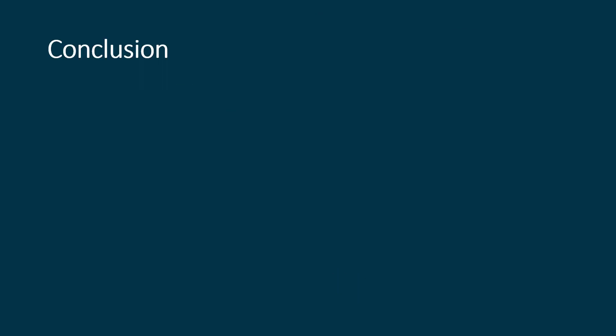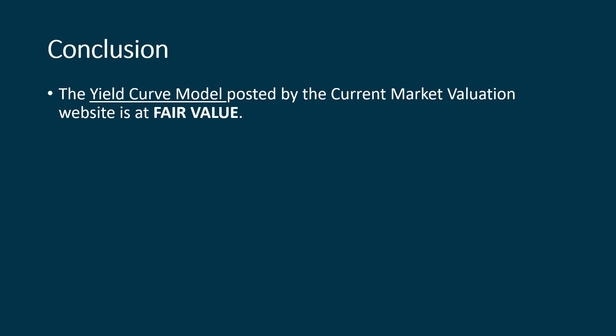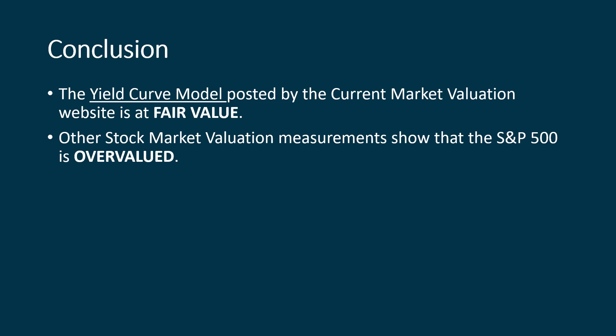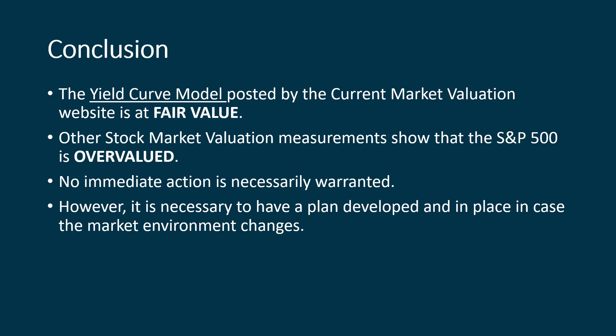So what is the conclusion? The yield curve model on the current market valuation website is at fair value. Other stock market valuation measurements show that the S&P 500 is overvalued. You don't necessarily need to freak out right now and sell everything. There are doom and gloomers out there, and there are people who think we'll just continue to go up and up — each one of those is unrealistic. We need to come to our own conclusion about what we think is going to happen and have a plan in place before things do happen. It's necessary to have a plan developed and in place in case the market environment changes.